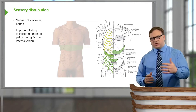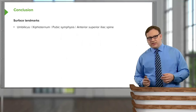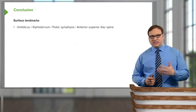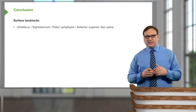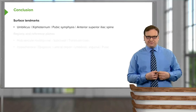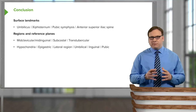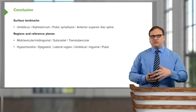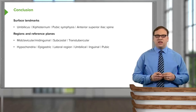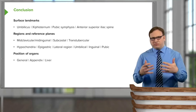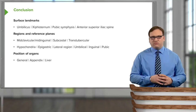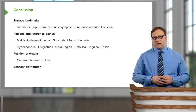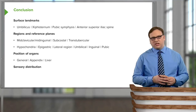In conclusion of this introductory surface anatomy lecture, we've looked at numerous surface landmarks like the umbilicus, the xiphoid process, pubic symphysis, and anterior superior iliac spine. We've used these to locate specific reference planes — mid-clavicular, mid-inguinal, subcostal, trans-tubercular — and how these divide the anterior surface of the abdomen into nine regions: hypochondriac, epigastric, lumbar, umbilical, inguinal, and pubic regions. We looked briefly at organ positions — specifically the appendix and the liver — and touched on sensory distribution from the skin and from the organs that lie deep to it.